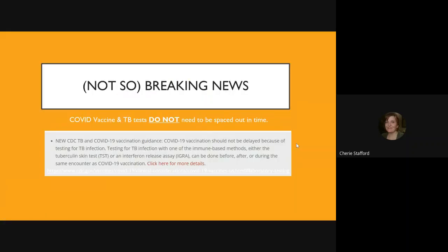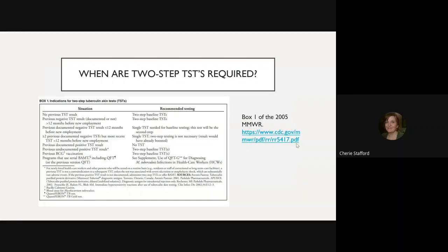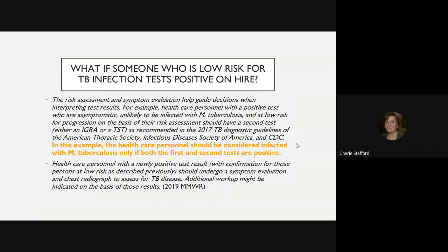COVID vaccine and TB tests do not need to be spaced out in time — for more information, you can go to CDC's website. Regarding two-step TSTs, refer to box one of the 2005 MMWR. You want a really good baseline in case of an exposure at your facility so you know whether people have converted from negative to positive. If someone low-risk tests weakly positive on one test, it is recommended to repeat the test, and if that repeat is negative, to consider it negative. This improves the quality of results.